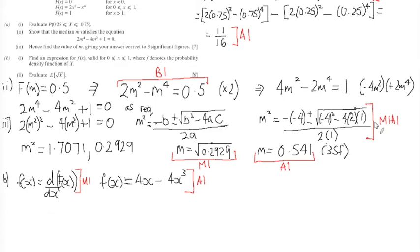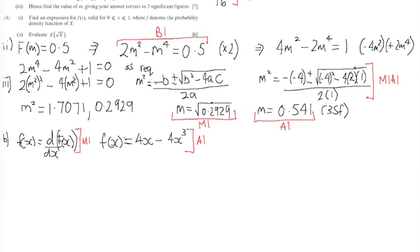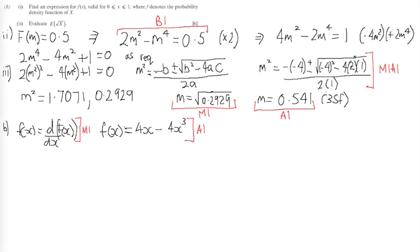Finally, we want to evaluate the expectation of the square root of x. So part two in this. The expectation of the square root of x will be found by doing integral between 0 and 1, square root of x multiplied by the function x which is 4x minus 4x cubed dx. To make life easier, I'm going to take this common factor of 4 outside the front of the integral. It helps.